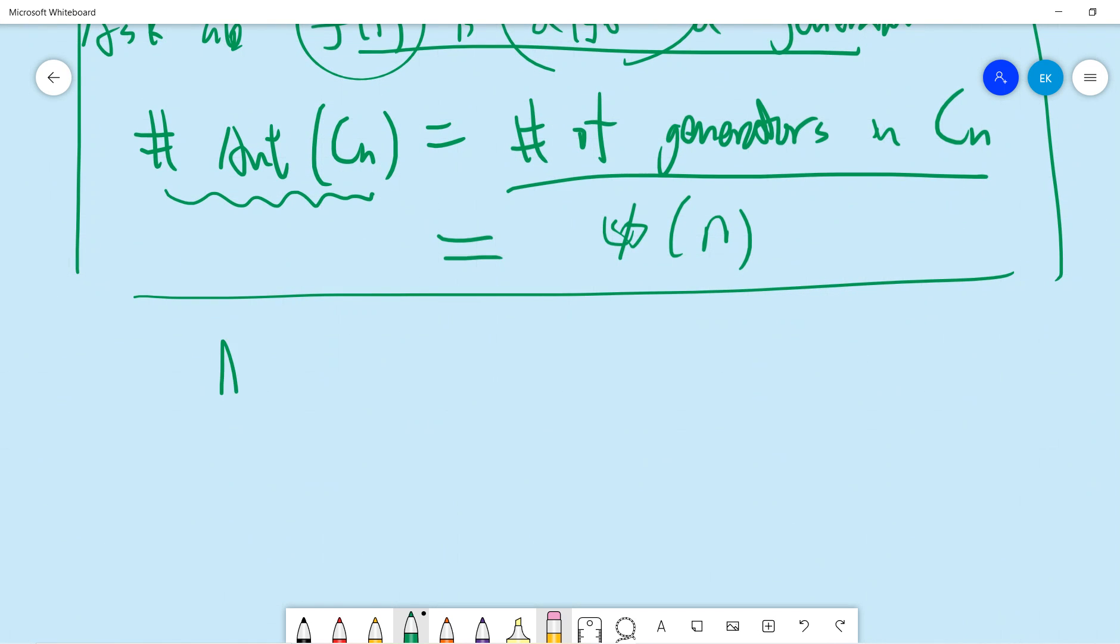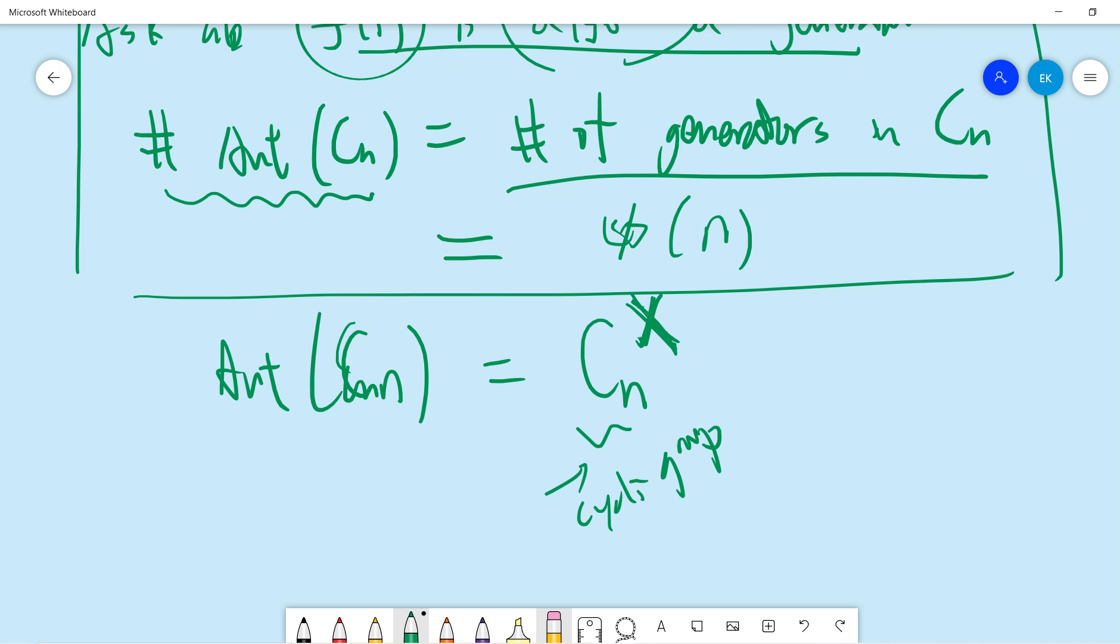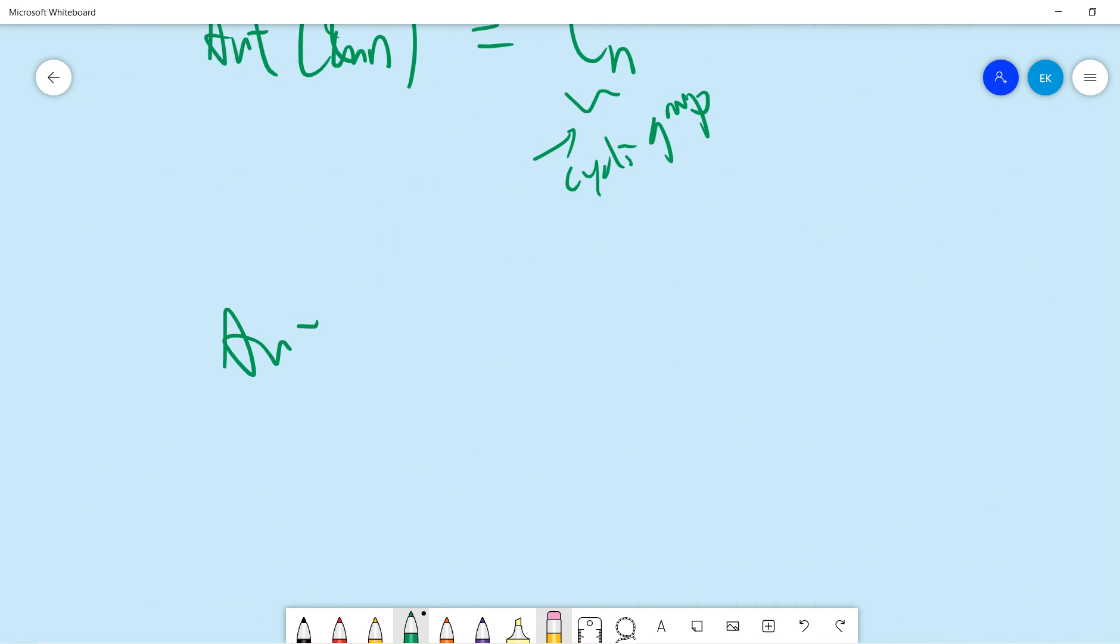The automorphism of Cn can be denoted as Cn cross. This cross means you take all the invertible elements. This is also a cyclic group.